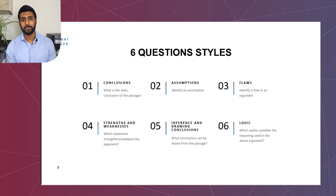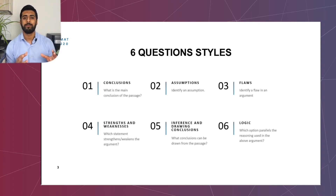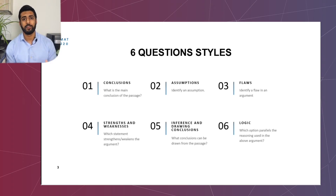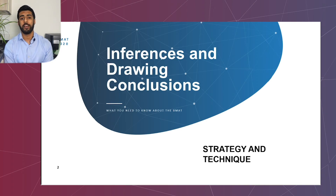We have conclusions — linked to questions like 'what's the main conclusion of the passage?' — and assumptions, which involve taking information from the passage and adding in extra information, which is obviously not a good way of thinking objectively. Then flaws, which could be linked to assumptions, making inappropriate links between things, or using an argument in an incorrect way — there are many different ways flawed arguments can be made. Finally, inferences and drawing conclusions, which is the second main question type in the critical thinking part of section one.